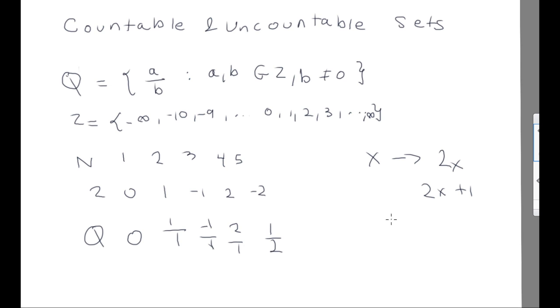Therefore, all the elements are covered, and therefore the cardinality of Q is equal to cardinality of N, and cardinality of Z is cardinality of N. Therefore we can say that the set of natural numbers, the set of integers, and the set of rational numbers are all countable sets.